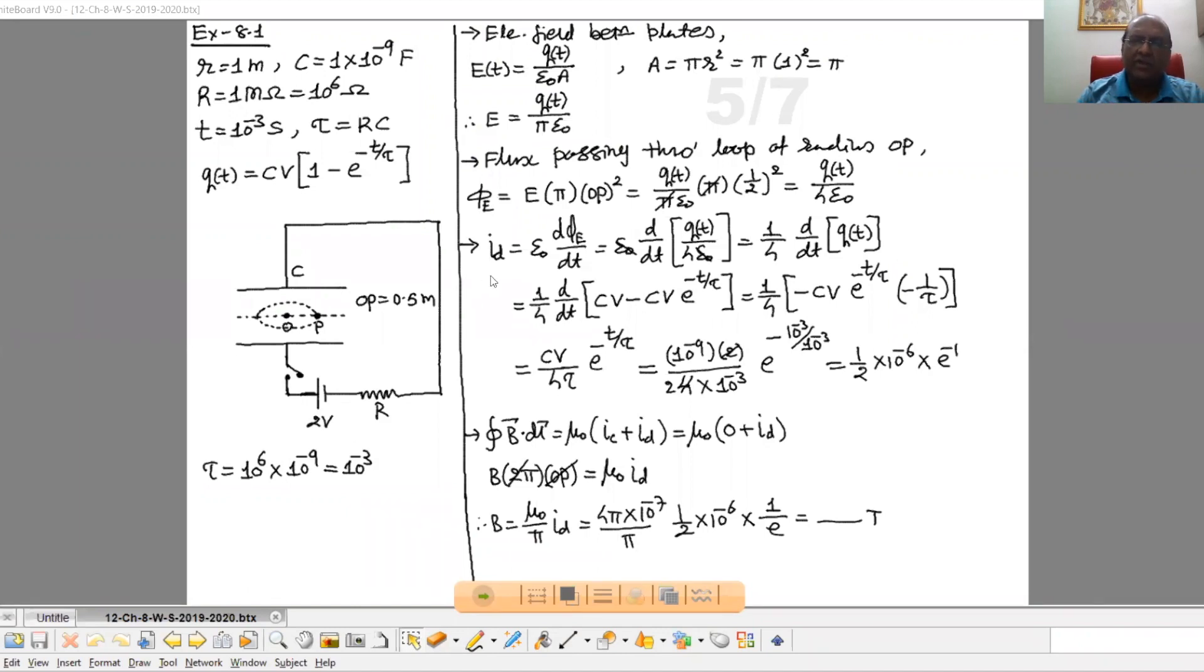Now displacement current through that particular loop is epsilon 0 D phi by DT. That is epsilon 0 D by DT of phi. Phi is Q upon 4 epsilon 0.